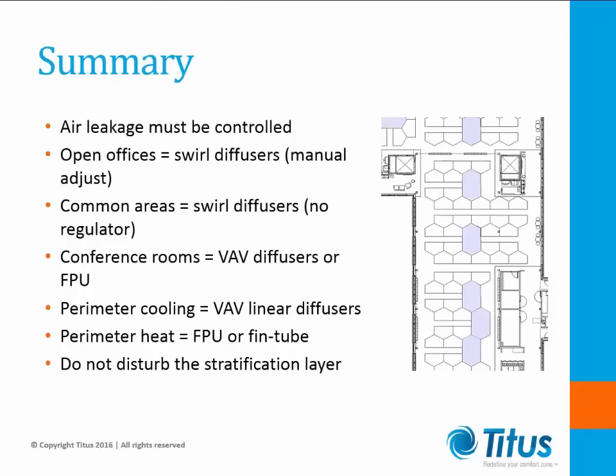To summarize what we've covered today about UFAD systems: Air leakage can be a major issue if not handled correctly. Open offices are best handled with swirl diffusers, while common areas are best handled with swirl diffusers without regulators. Conference rooms are best handled with actuated diffusers or fan-powered terminals. Perimeter cooling is best handled with VAV linear diffusers. Perimeter heating can be handled by fan-powered terminals, but thin tube would be better. Perimeter diffusers must not disturb the stratification layer.